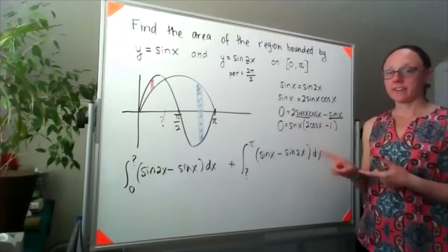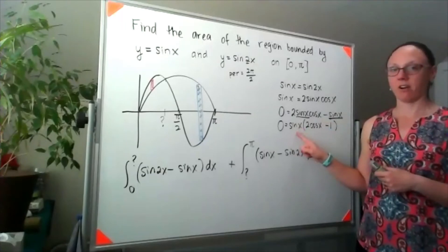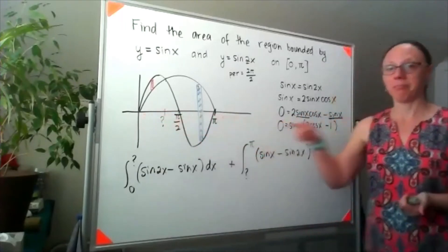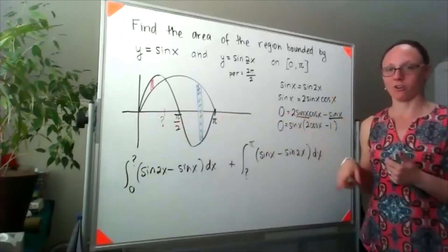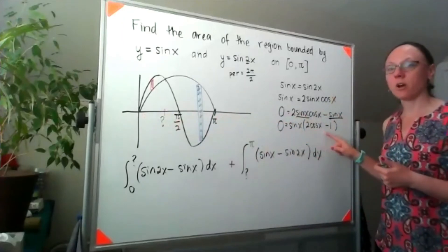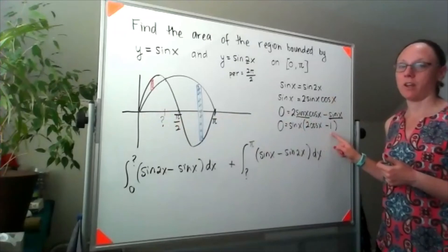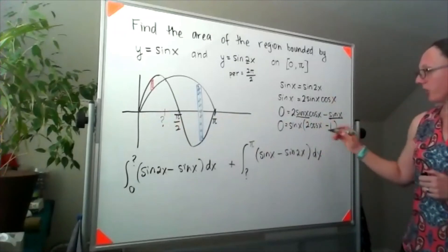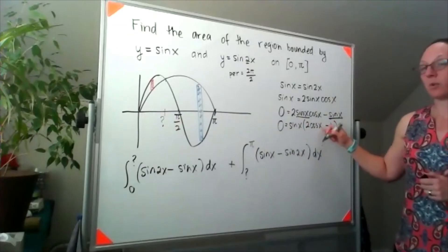So I know these are going to intersect whenever sine of x is equal to 0. Well, sine x is equal to 0 at 0 and pi - great, we already found those two points on our graph - or when 2 cosine x is equal to one half. This is the same as saying that cosine of x must be equal to one half.